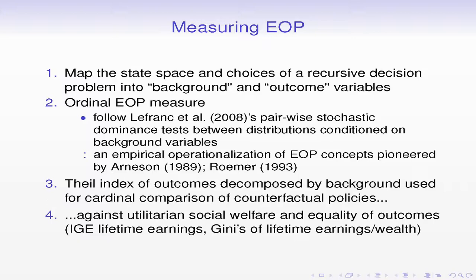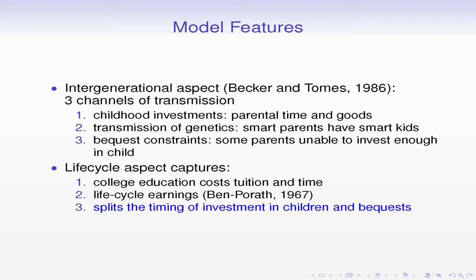The model is very standard, following the tradition of Becker and Tomes. You have a parent who wants to invest in the child in two ways: human capital investment and financial bequests. What really matters in this framework are childhood investments, and it also matters to account for parental time, not just goods inputs. We also assume an exogenous transmission of genetics—naturally smart parents have naturally smart kids—but you can still invest in human capital to overcome lower natural ability.